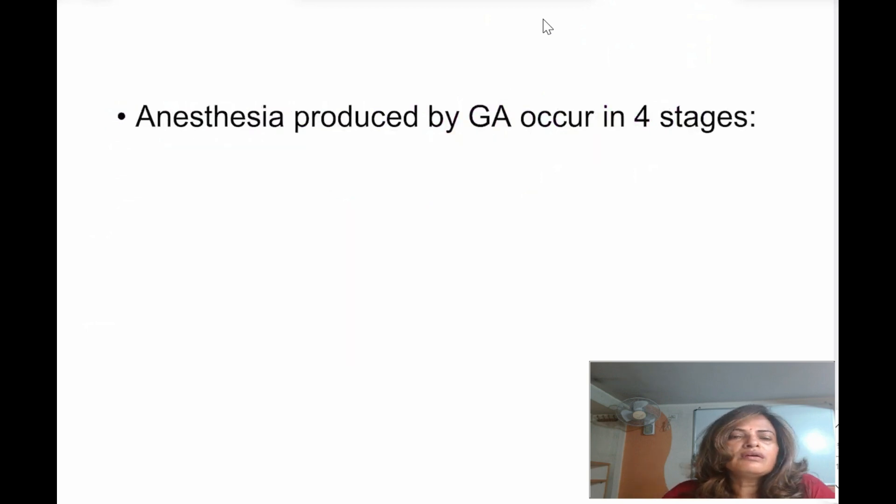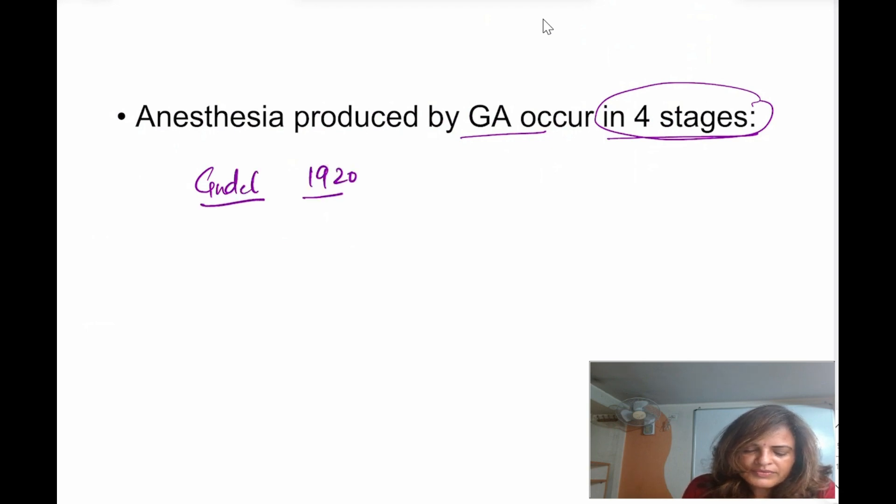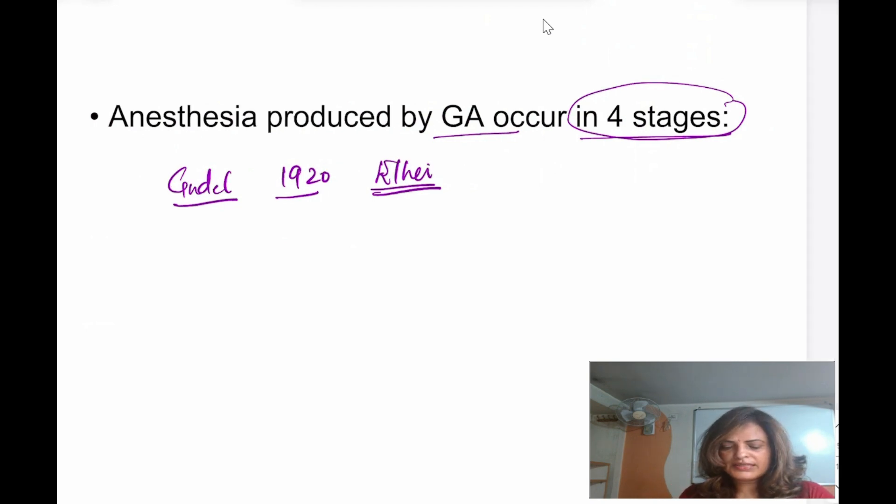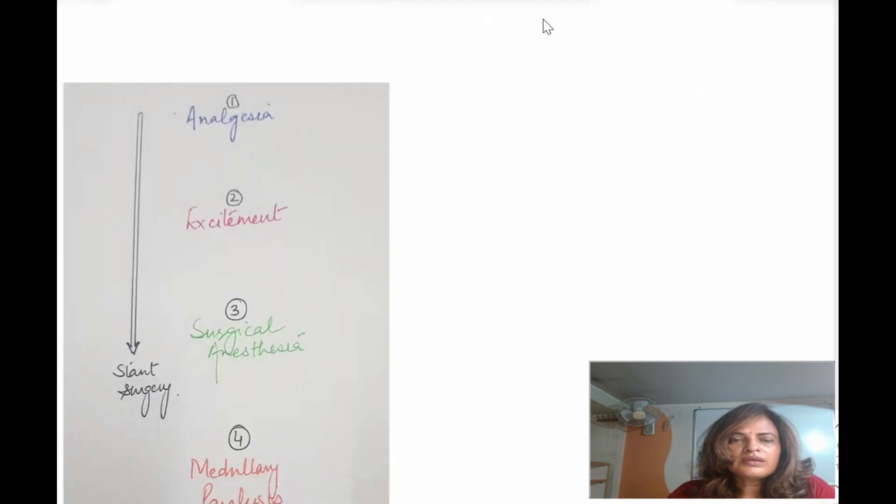Now, whenever you are doing anesthesia with general anesthetic, there are total four stages. Guedel proposed these in 1920. This is shown by ether. In modern day practice, we do not see all the clear-cut four stages of general anesthesia. Now, what are those four stages of general anesthesia?